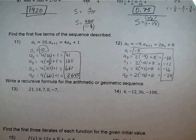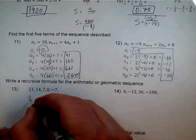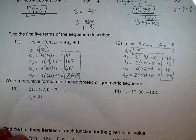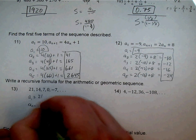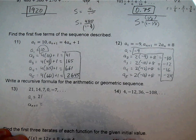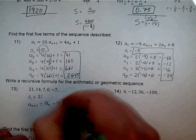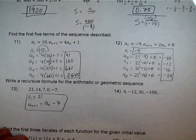For numbers 13 and 14, we work backwards to write the recursive rule. For number 13: A sub 1 is 21. For the recursive part, it looks like we're decreasing by 7 over and over again. So A sub N+1 equals A sub N minus 7. That's the recursive rule.